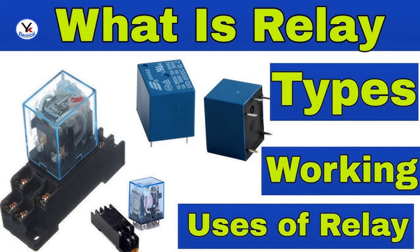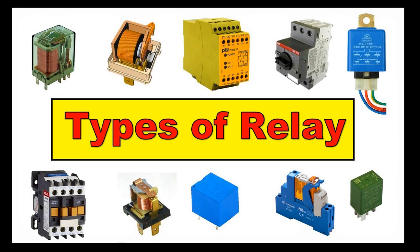In summary, the switching function of a relay involves using a low-power control signal to activate an electromagnet, which, in turn, causes the contacts to open or close, controlling the flow of electrical current in the load circuit. This basic function is crucial in various applications where the separation of control and load circuits is necessary or where electrical isolation is required.